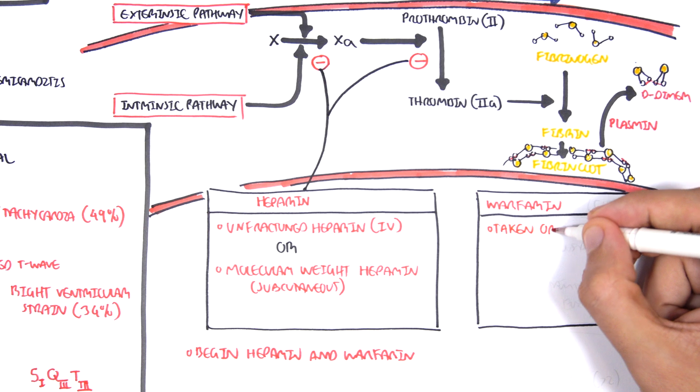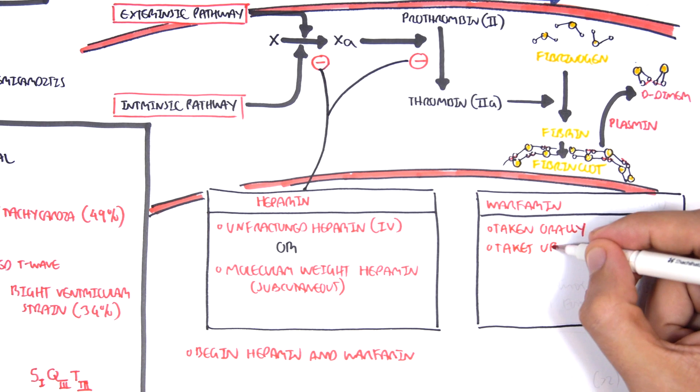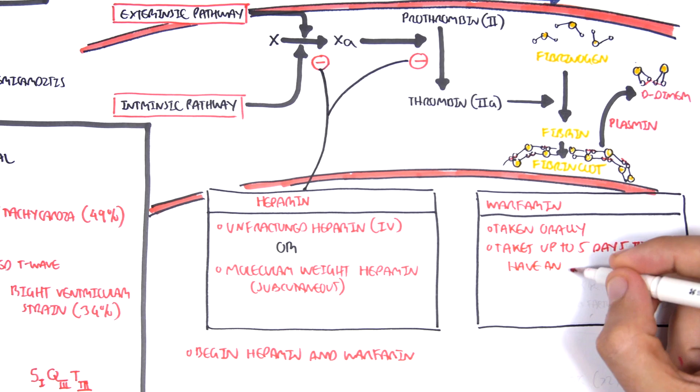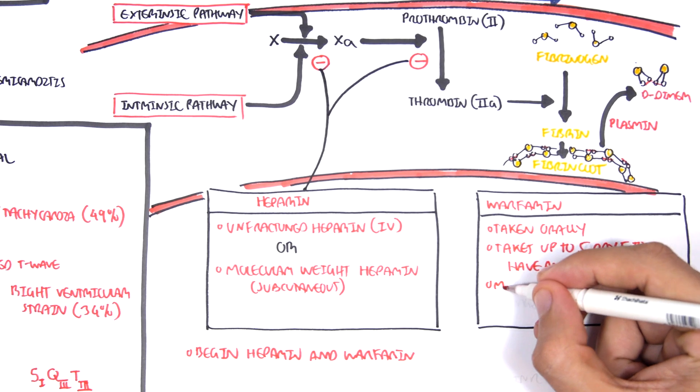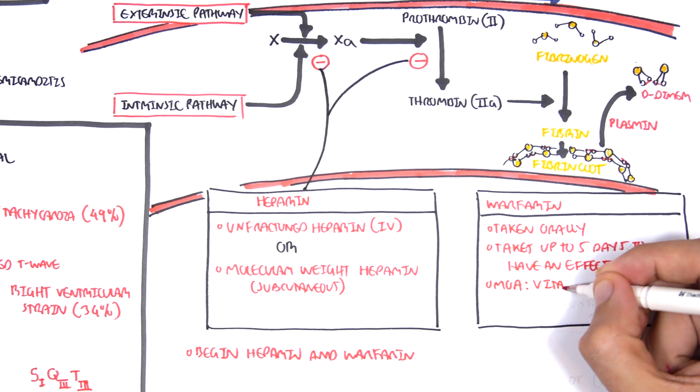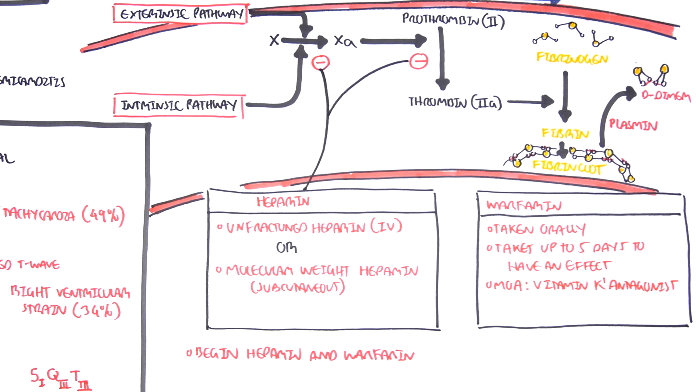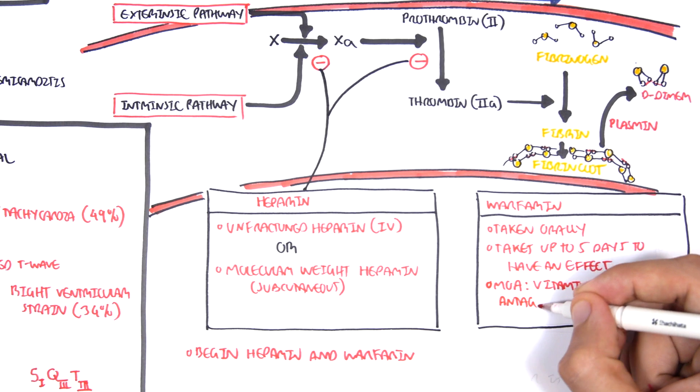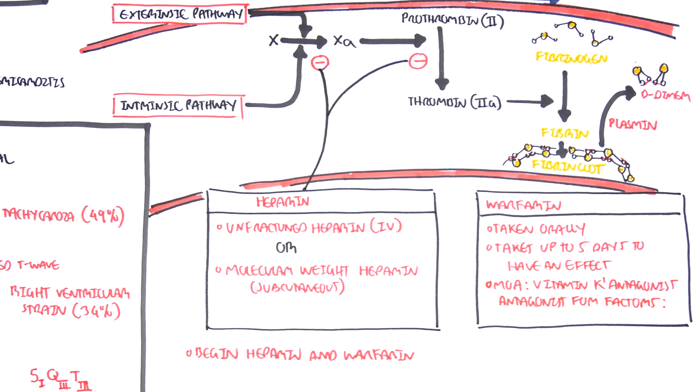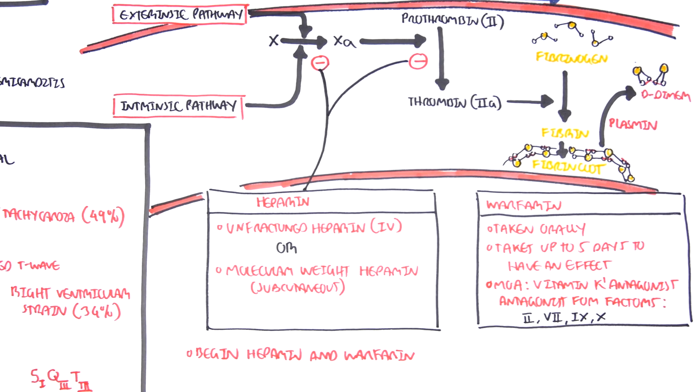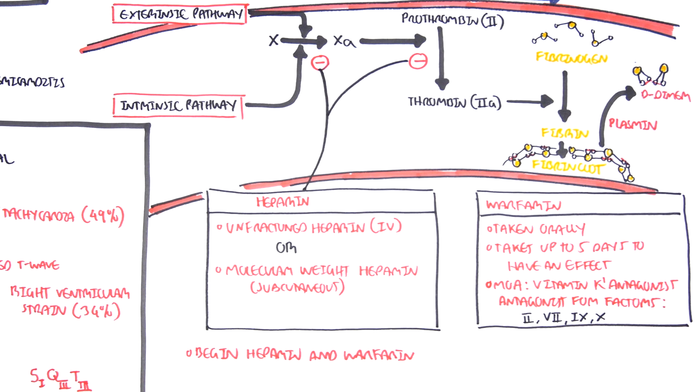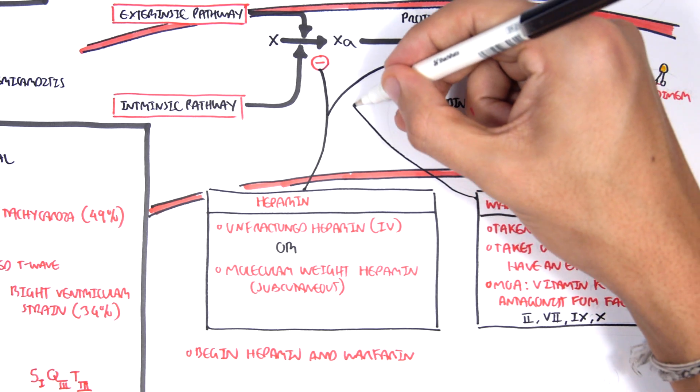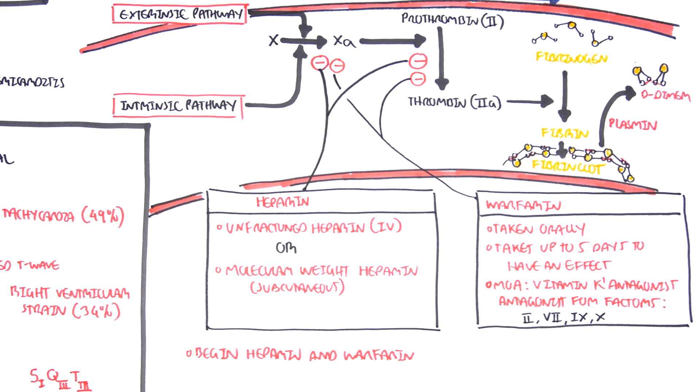Warfarin on the other hand is taken orally and takes up to five days to have an effect. And that is why we begin warfarin with heparin in order to wait for warfarin to have an effect. The mode of action of warfarin is that it is a vitamin K antagonist. And therefore it antagonizes the synthesis of the clotting factors 2, 7, 9, and 10. If you live in Australia, this is kind of easy to remember because these are the TV channels. So essentially the effects of warfarin is also like heparin in that it inhibits the formation of clotting factor 10 and also 2, thrombin, thus preventing the formation of fibrin mesh.